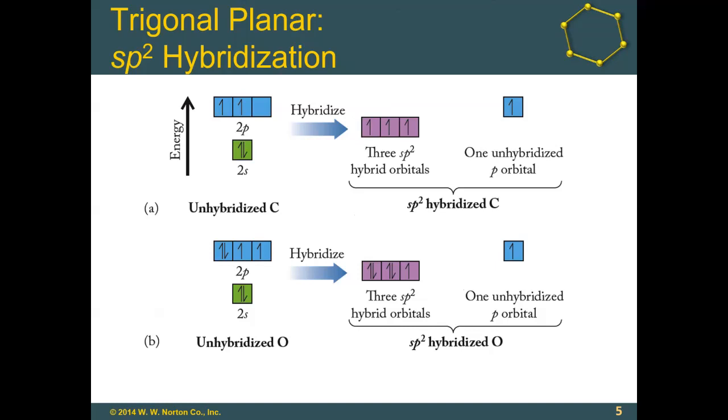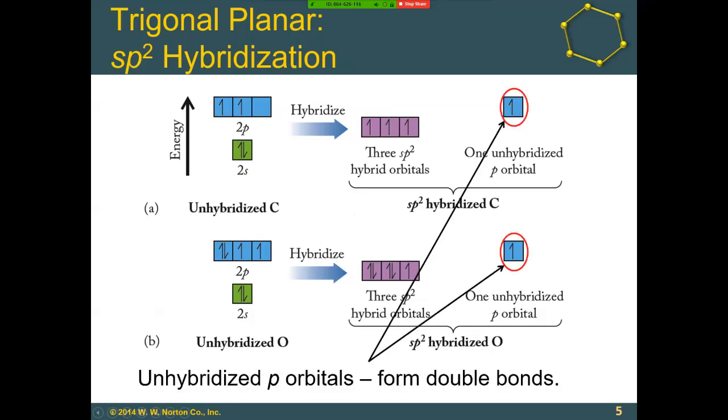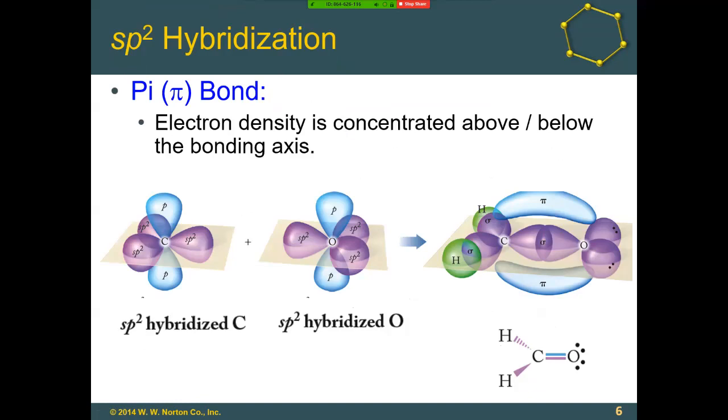The three sp2 hybridized orbitals form sigma bonds, while unhybridized p orbitals form double or triple bonds called pi bonds. Pi bonds have electron density not directly along the axis between atoms. Carbon has a p orbital above and below the plane, while the three sp2 orbitals form a trigonal planar shape.